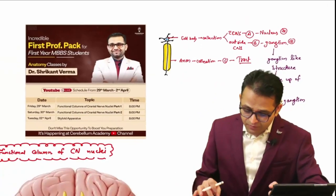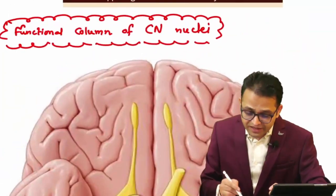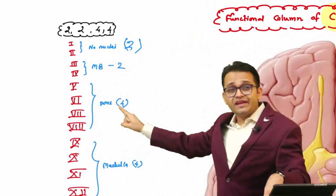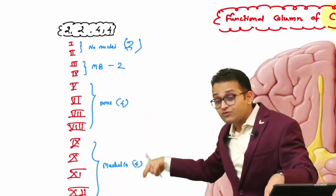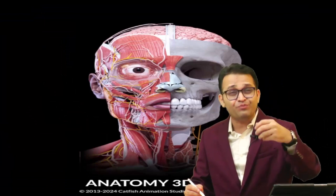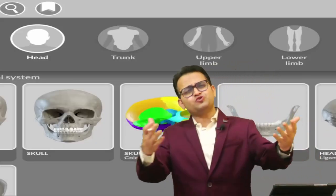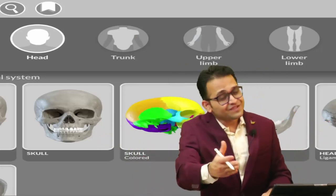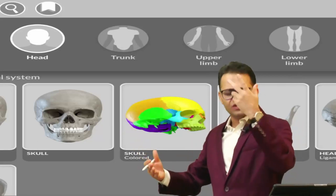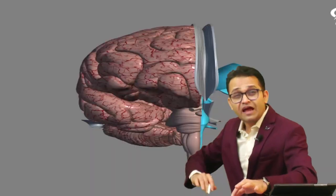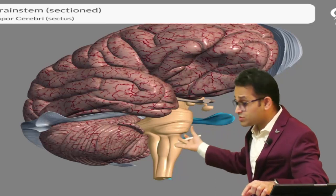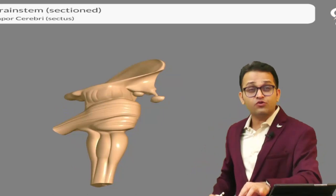We are going to look at the functional column of cranial nerve nuclei. First two cranial nerves - no nucleus. Next two - midbrain nucleus. Next four - pontine nucleus. Last four - medullary nucleus. Now, I'm showing you a beautiful three-dimensional anatomy. This is the lateral supralateral aspect of the brain. This is our brain stem, and all cranial nerve nuclei are located in the brain stem.